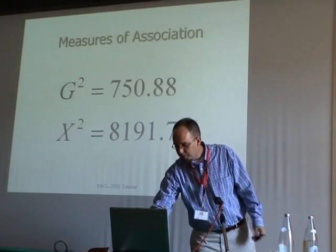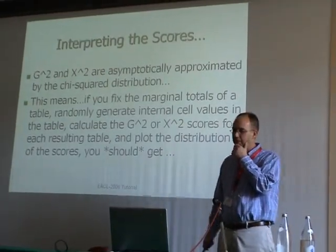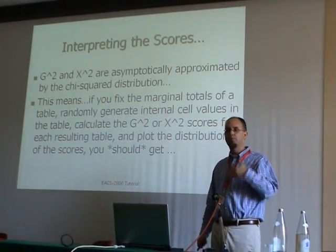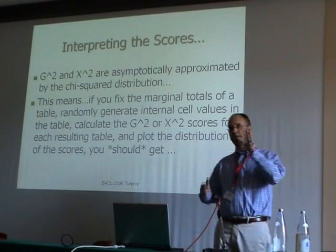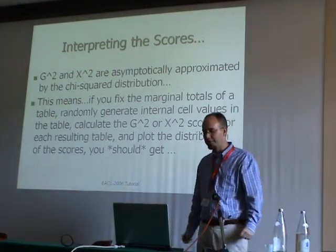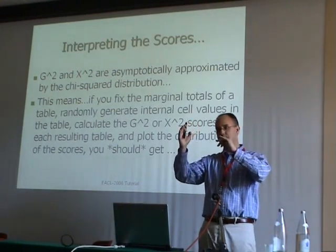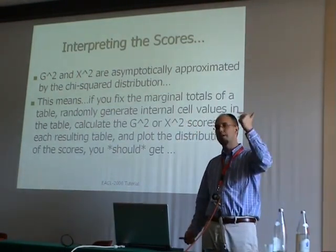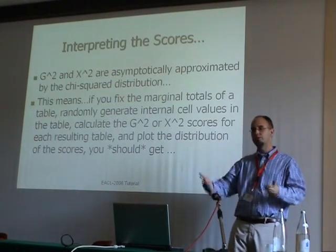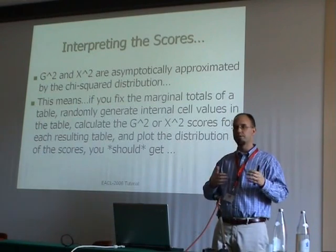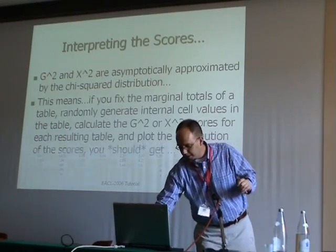Both the log likelihood ratio and Pearson's test are asymptotically approximated by the chi-square distribution. In practice, if you fix the marginal totals and generate many random tables obeying those constraints, computing scores across hundreds of thousands of trials, the distribution of those scores looks like a chi-square distribution. Even though the skewness of marginal totals technically violates certain asymptotic assumptions, empirical verification confirms this result holds well enough for feature selection purposes.